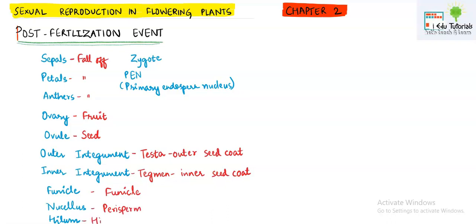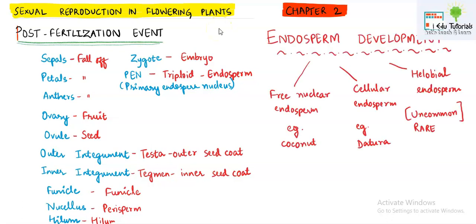The hilum will stay as such. The zygote will divide to form an embryo, and the primary endosperm nucleus — which was triploid in nature because it was formed by the fusion of three haploid cells — will grow into the endosperm. Prior to embryo formation, the endosperm must divide first, because it will provide nutrition to the developing embryo. So it is essential that endosperm divides first.